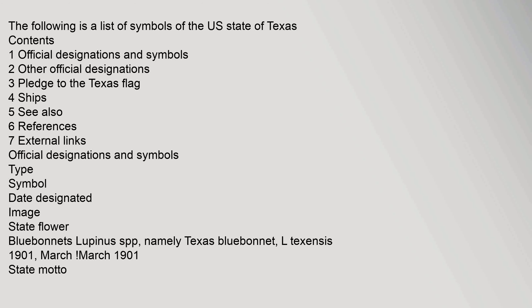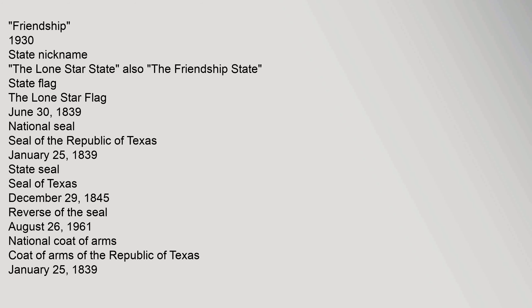State Flower: Bluebonnets (Lupinus spp.), namely Texas Bluebonnet (L. texensis), 1901. State Motto: Friendship, 1930. State Nickname: The Lone Star State, also The Friendship State. State Flag: The Lone Star Flag, June 30, 1839. National Seal: Seal of the Republic of Texas, January 25, 1839. State Seal: Seal of Texas, December 29, 1845.